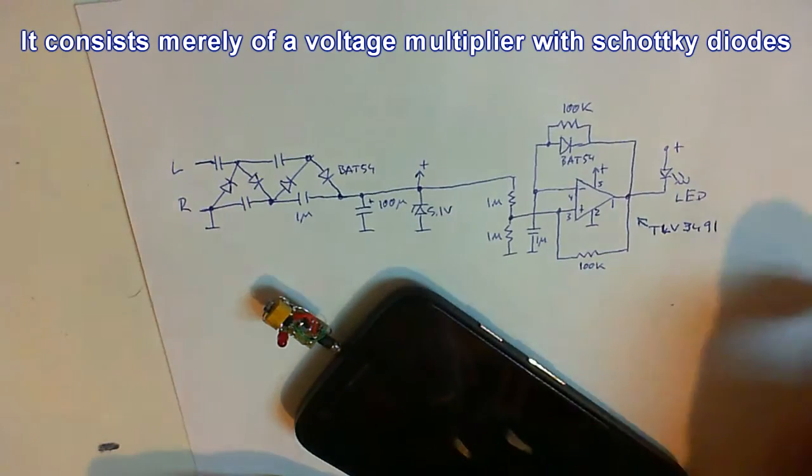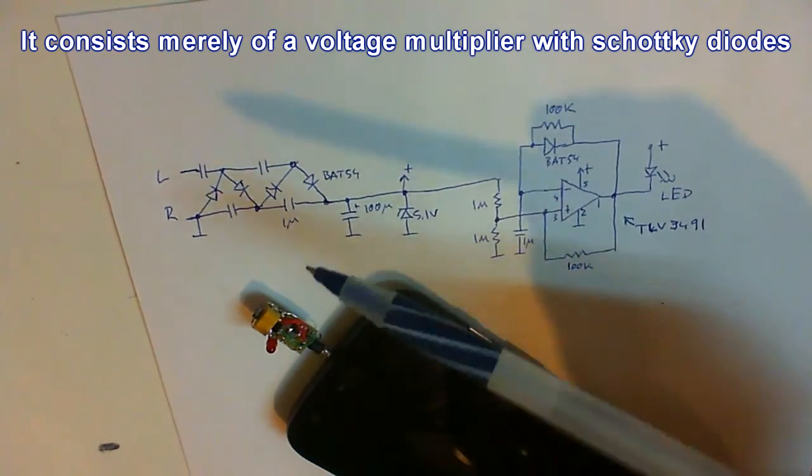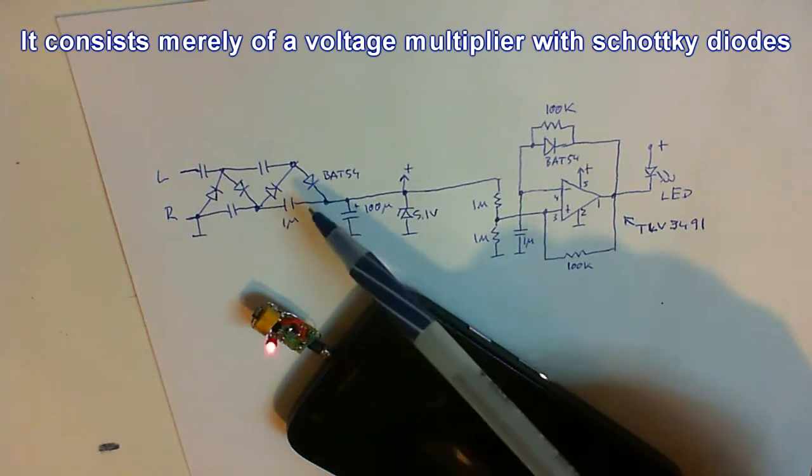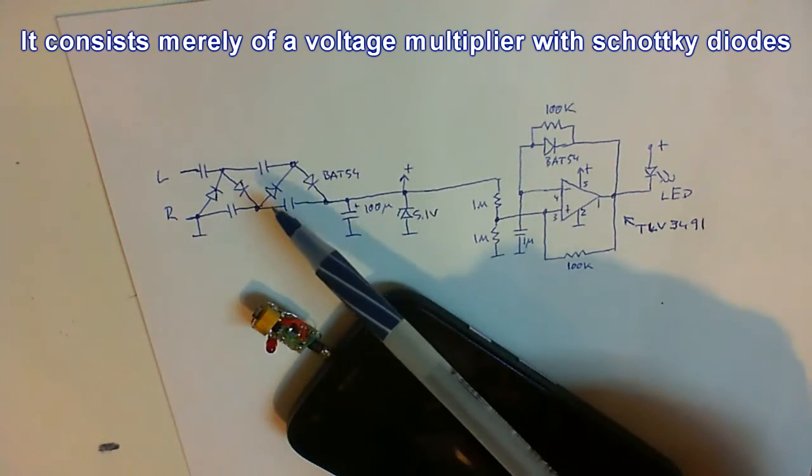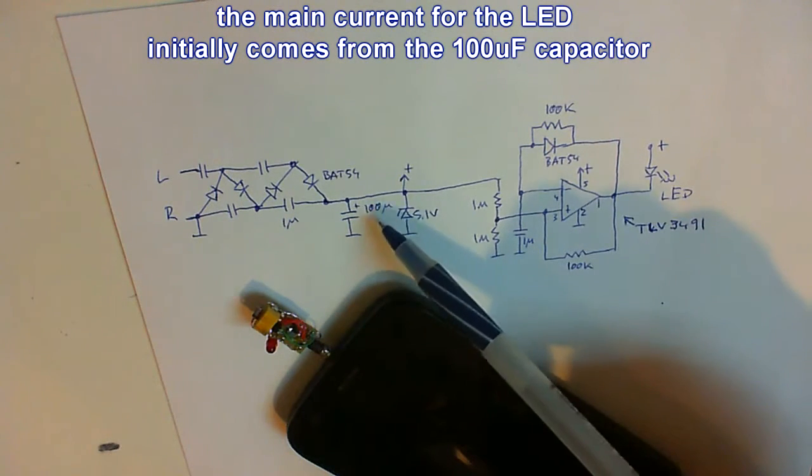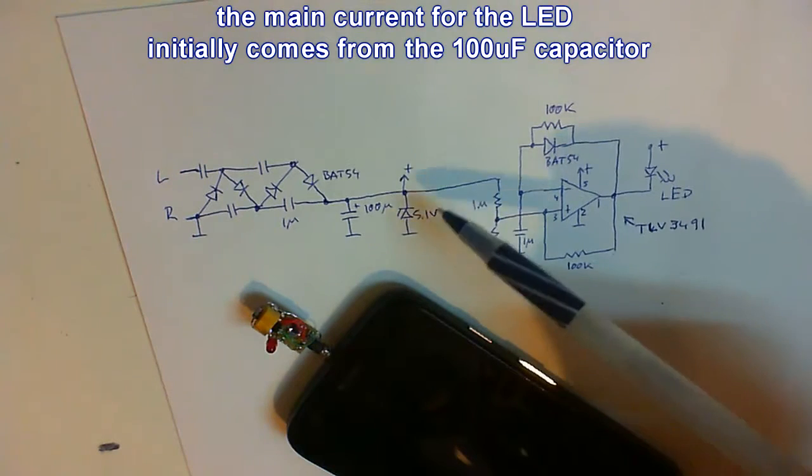The circuit is pretty simple. It's just a voltage multiplier with four Schottky diodes and four ceramic capacitors of one microfarad each, plus a larger 100 microfarad capacitor and a diode.